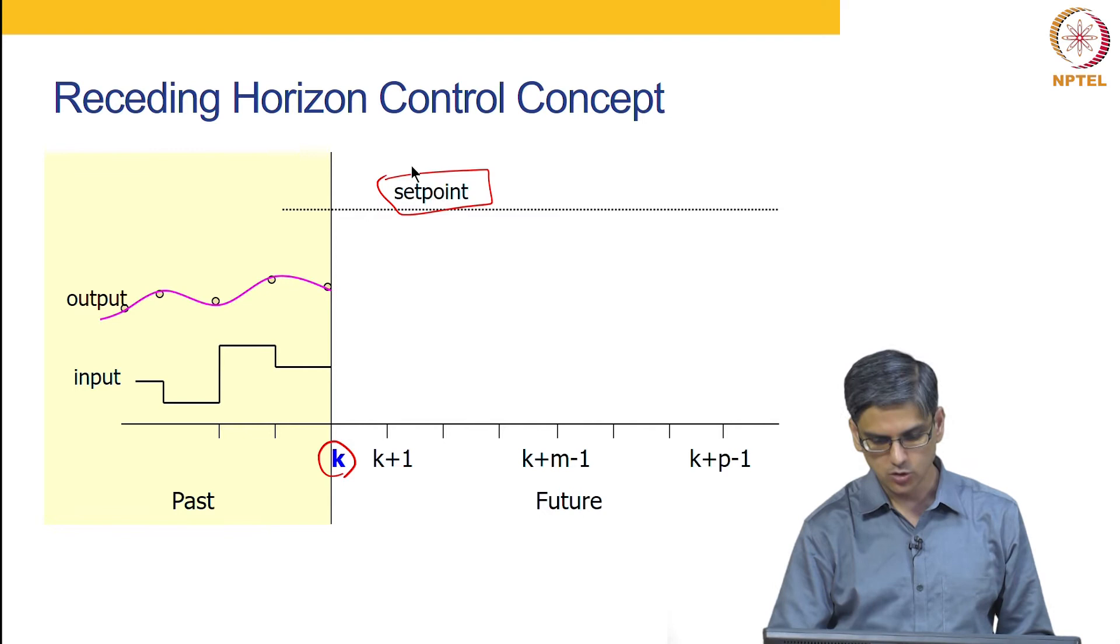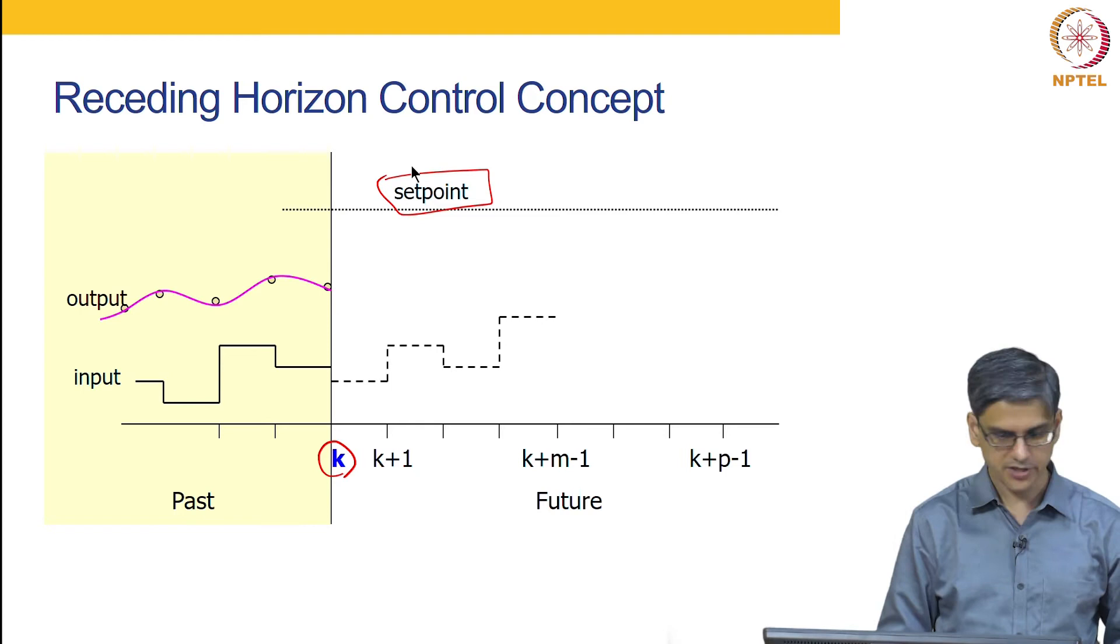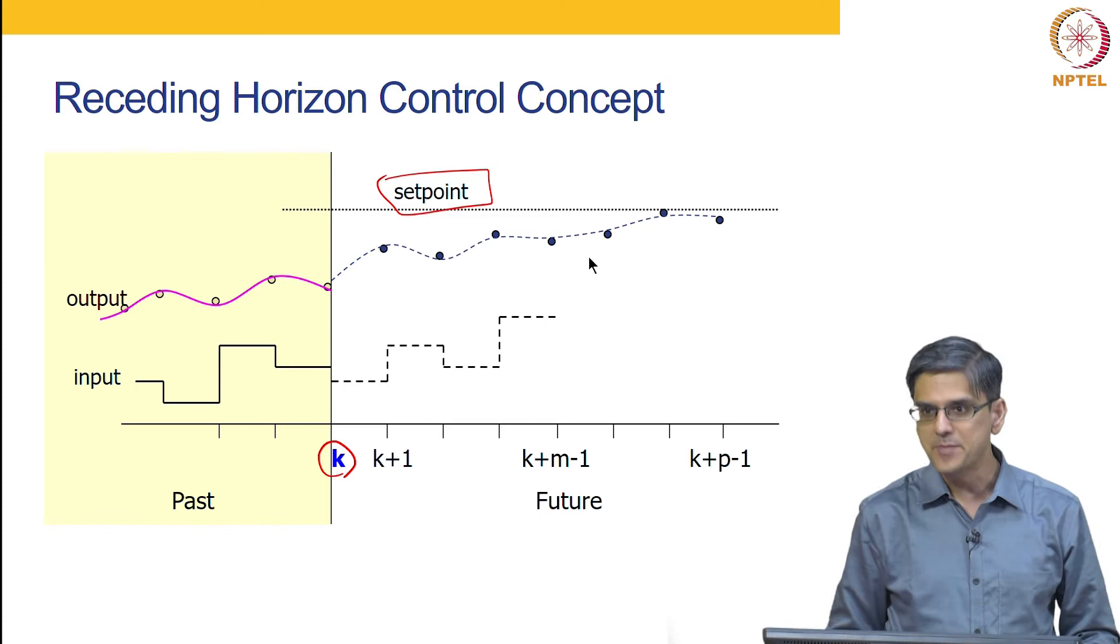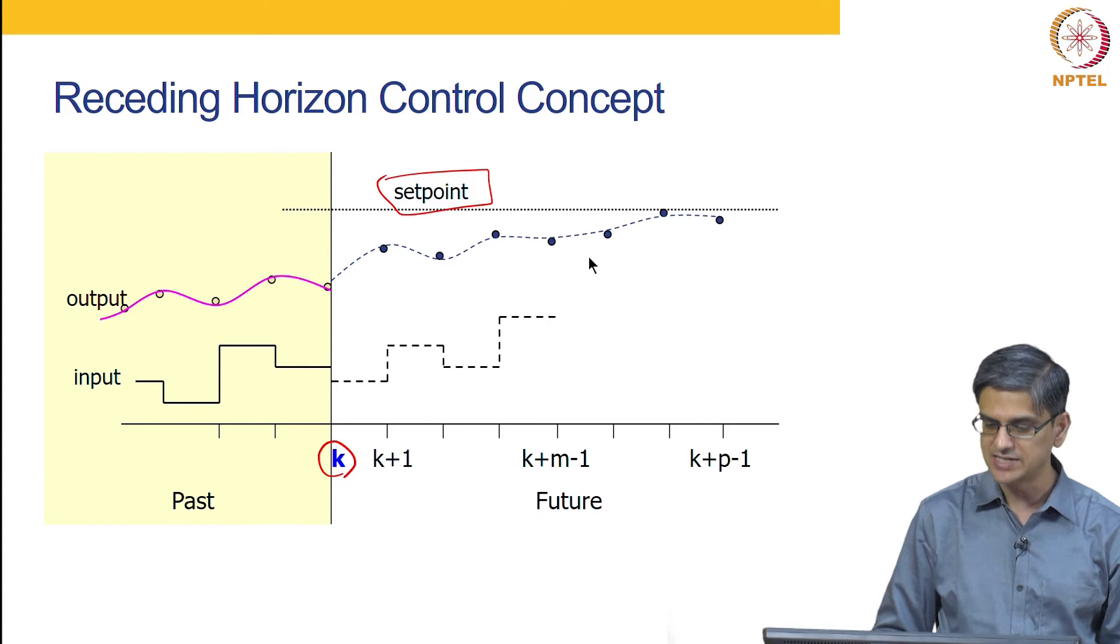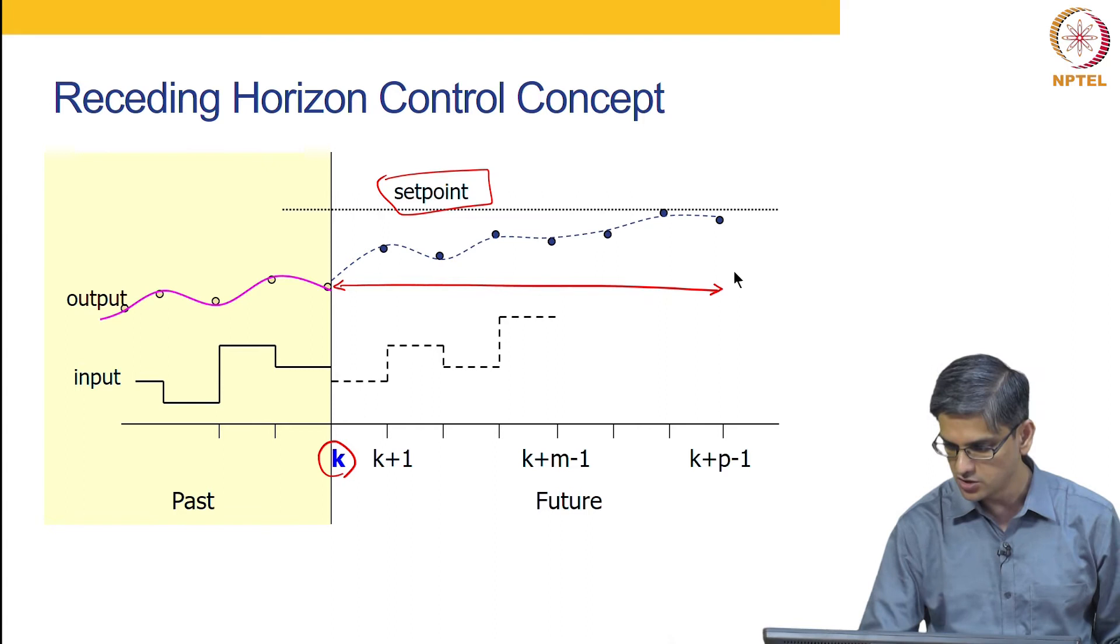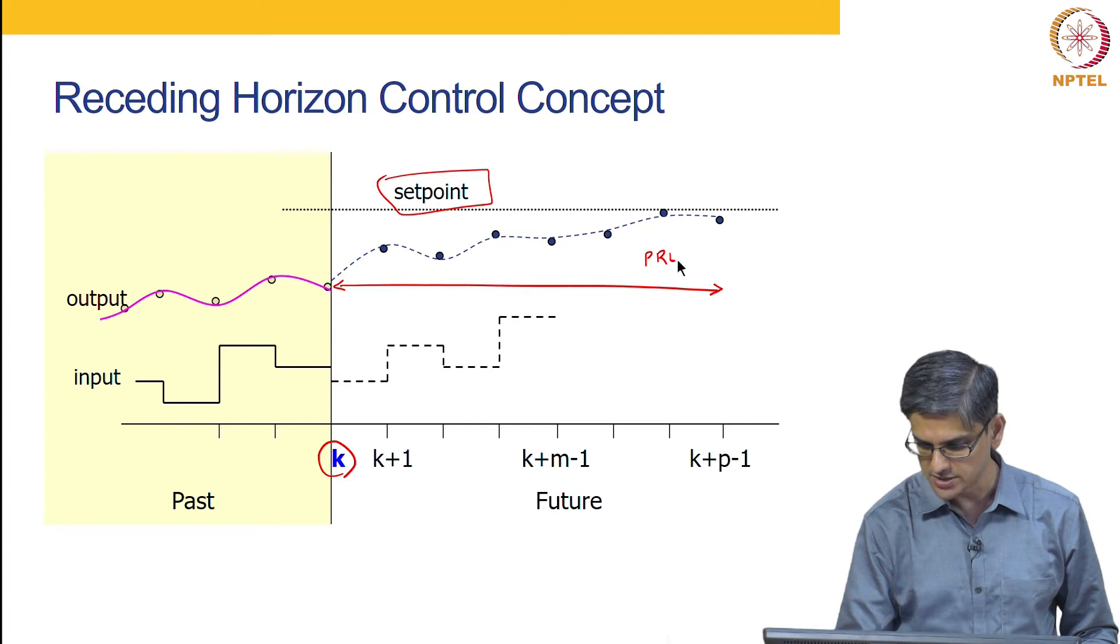So the model is used to try out a few input trajectories. Now based on these input trajectory, the model is going to be used in order to predict what the future is going to look like. Based on the model's predictions of the future, an optimizer determines what is the best or the most optimal trajectory. What you see over here is that it is predicting the future for a certain time horizon and this horizon is called prediction horizon.